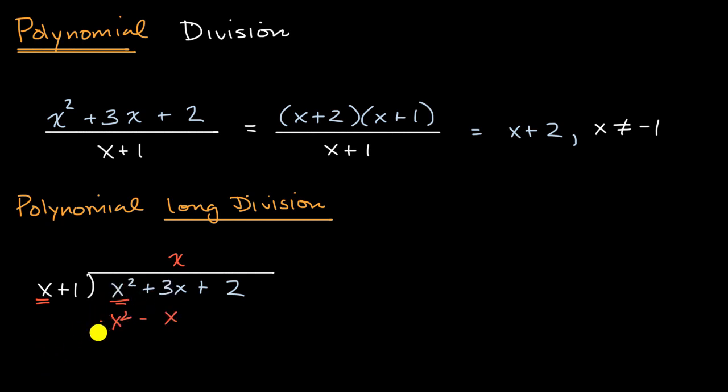And then you subtract this from that. You might already start to see some parallels with the long division that you first learned in school many years ago. So when you do that, these cancel out. 3x minus x, we are left with 2x, and then you bring down that two. So 2x plus two, and you say, how many times does x go into 2x? Well, it goes two times. So you have a plus two here.